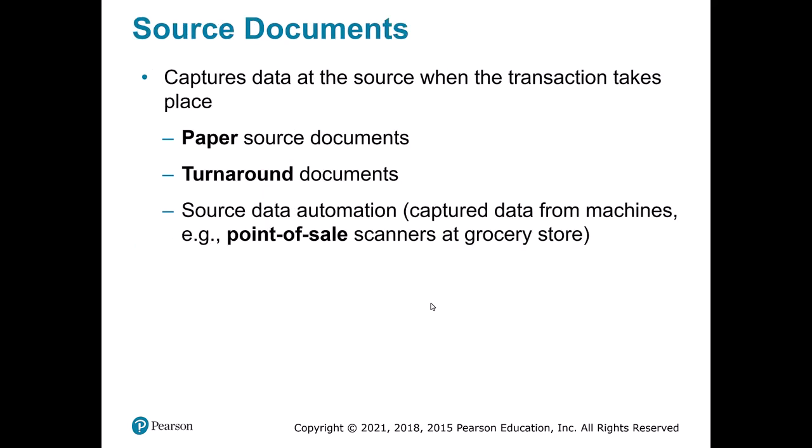There are different kinds of source documents. Some are standard paper, like an invoice. We also have turnaround documents — if you've ever gotten a bill with pre-printed information asking you to check a box and send it back, that's a turnaround document. The idea is there's less chance of keying information incorrectly if you give the person a pre-filled form they just need to sign or check. Nowadays we also have a lot of point-of-sale information, where data is captured electronically as quickly as possible without clerks typing manually.